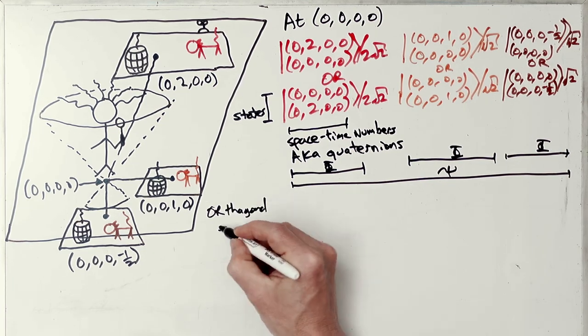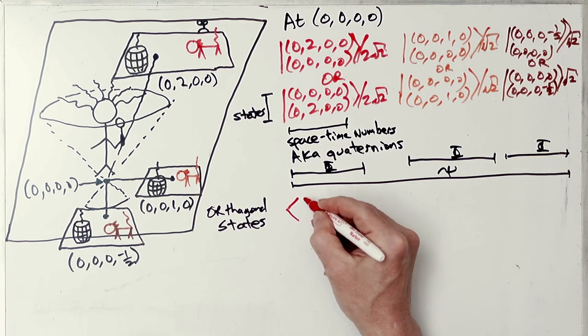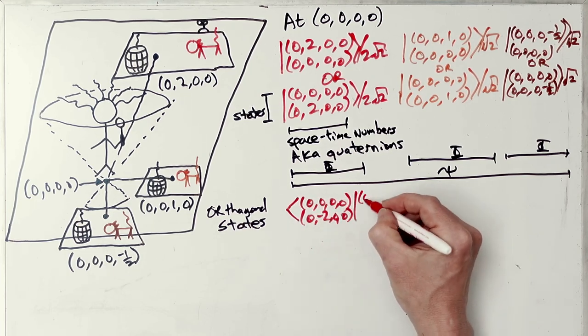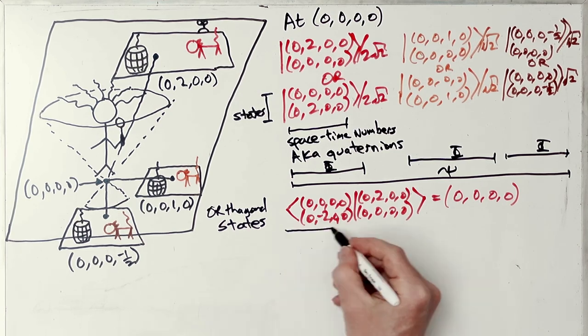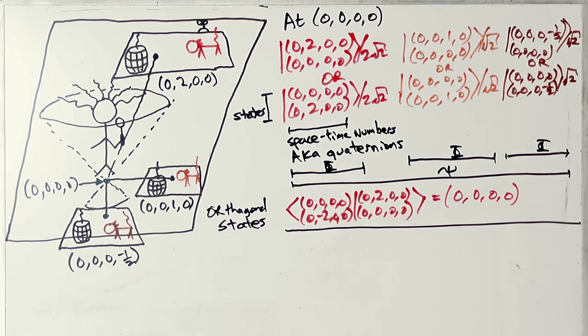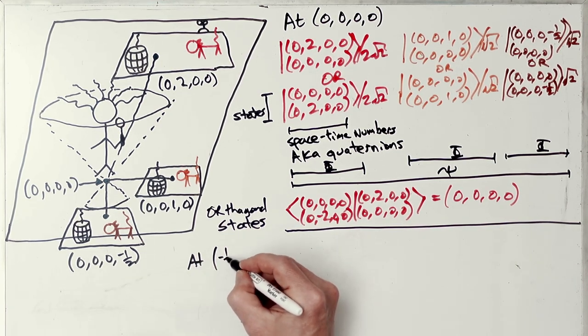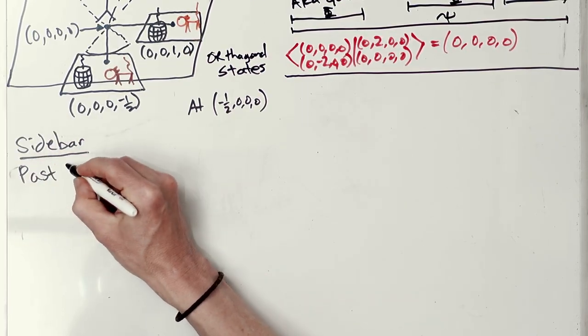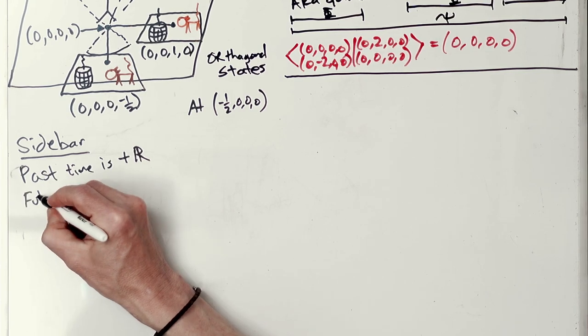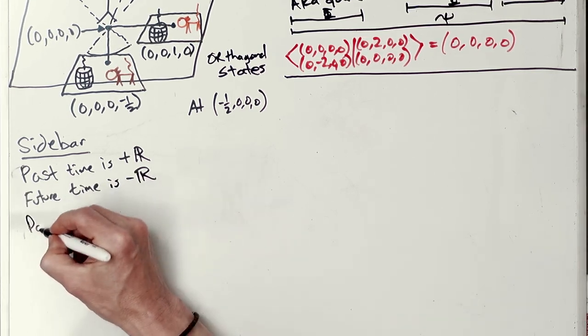Space-time numbers, aka quaternions. We've got two states, three wave functions, but the total wave function is all three of them. Now these states are orthogonal, by that I mean you take dead times live, the inner product, you end up with zero. Okay, so at time minus a half, what's this minus business? The past time is a positive real number whereas the future is a negative real number.